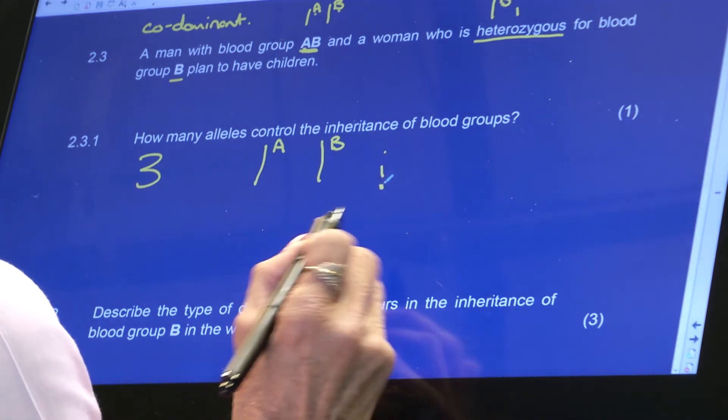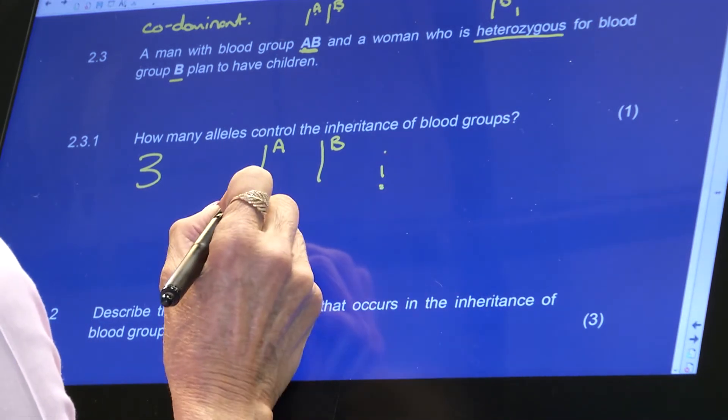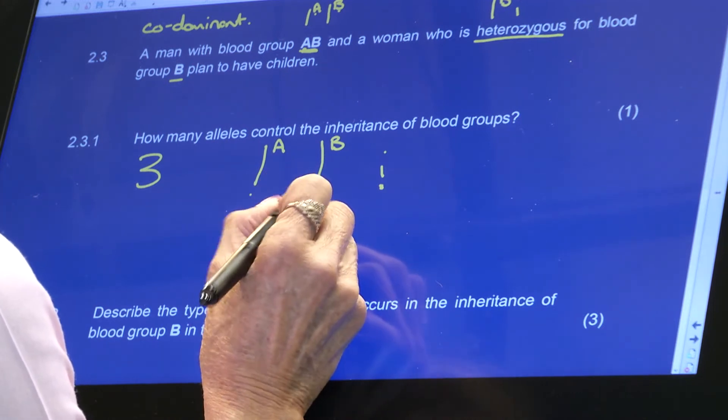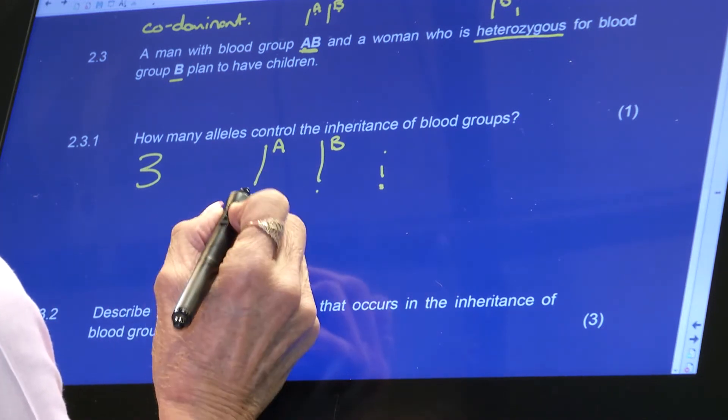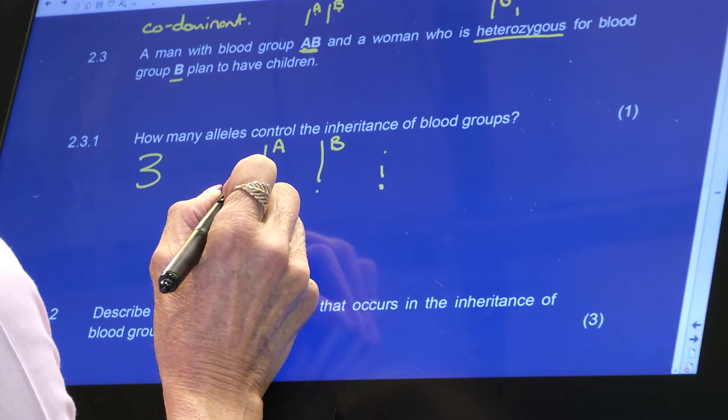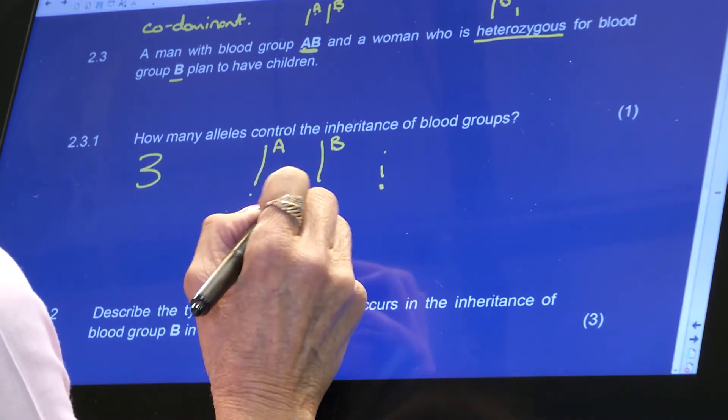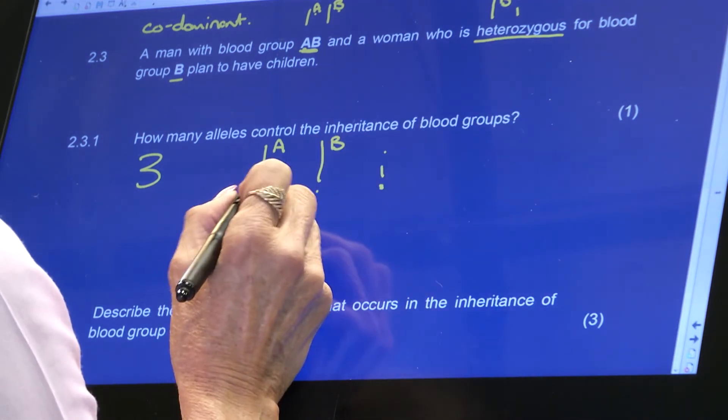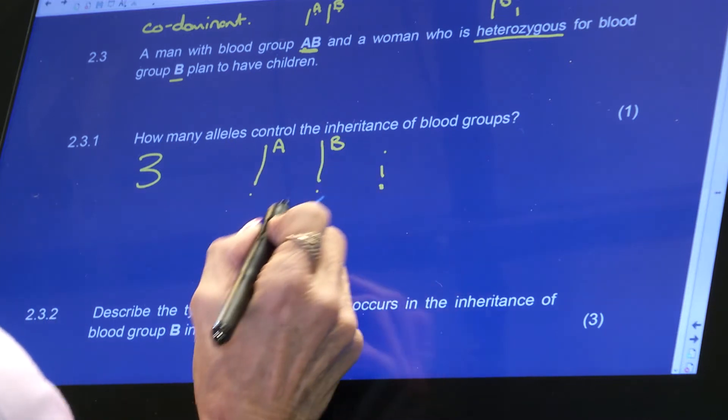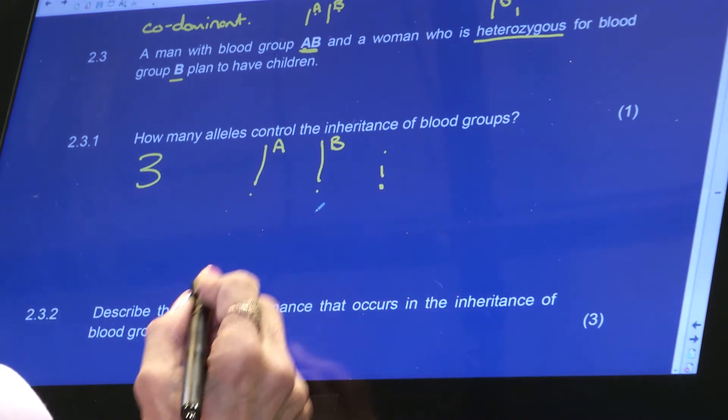...that will give you blood group O. And if it's blood group AB, then both these alleles are present. And if it's two A's, then it's blood group A. And if it's two B's, it's blood group B. And if it's heterozygous, you'll have AI and BI, and then it'll still be blood group A or B.